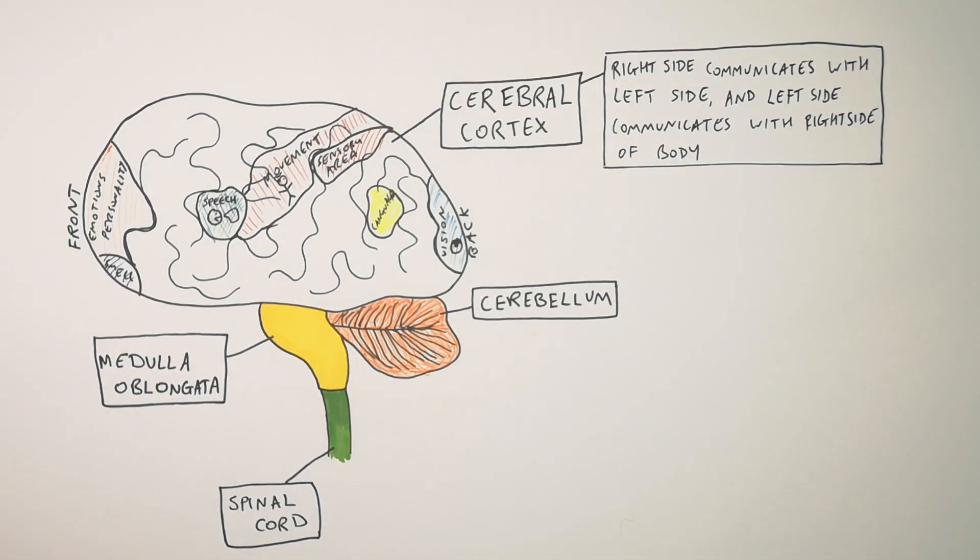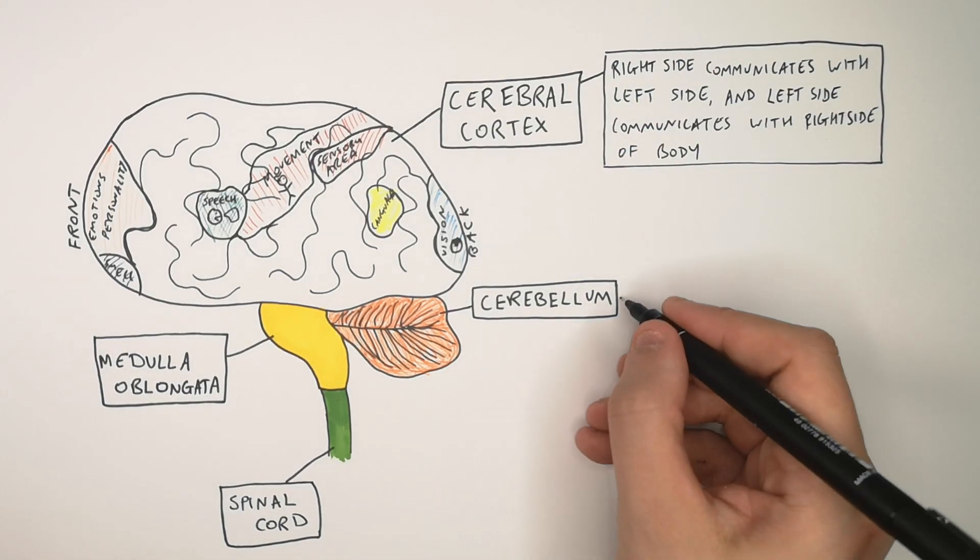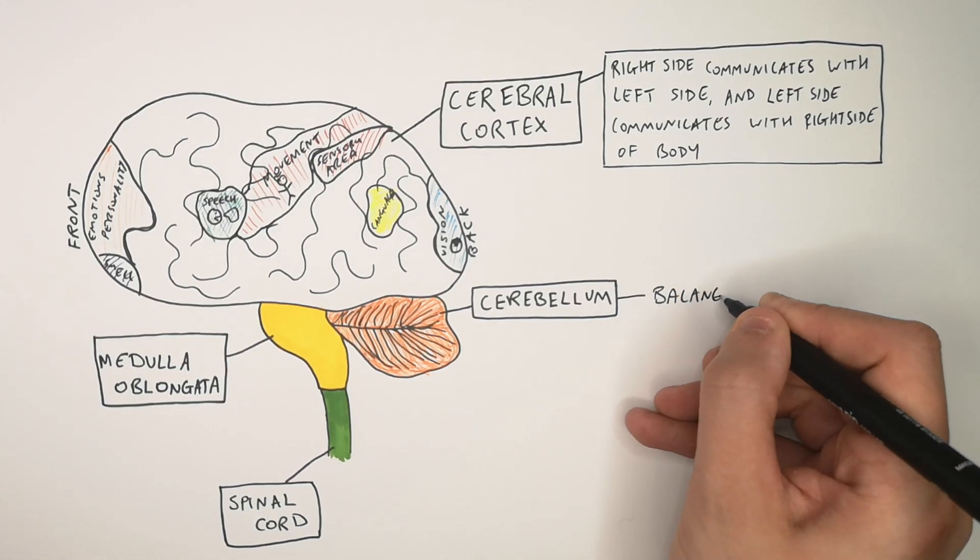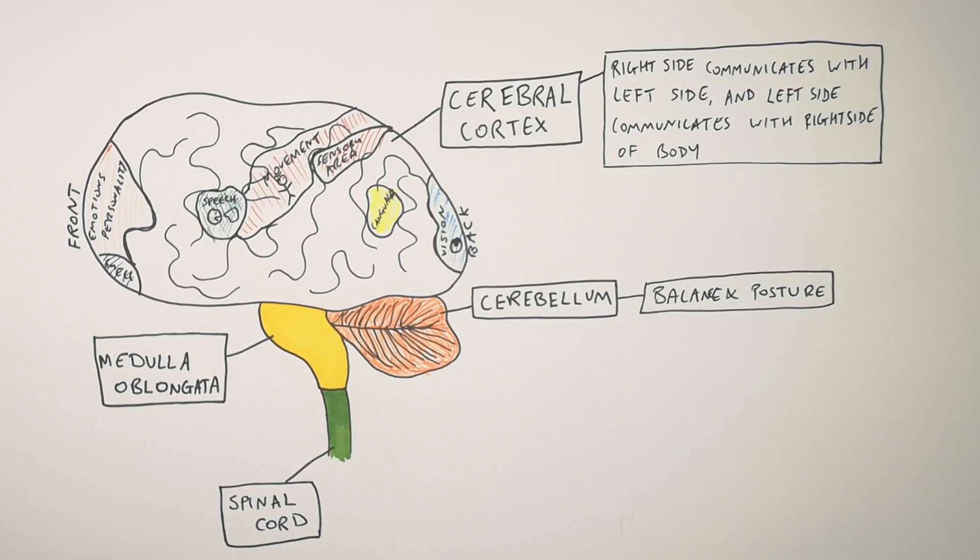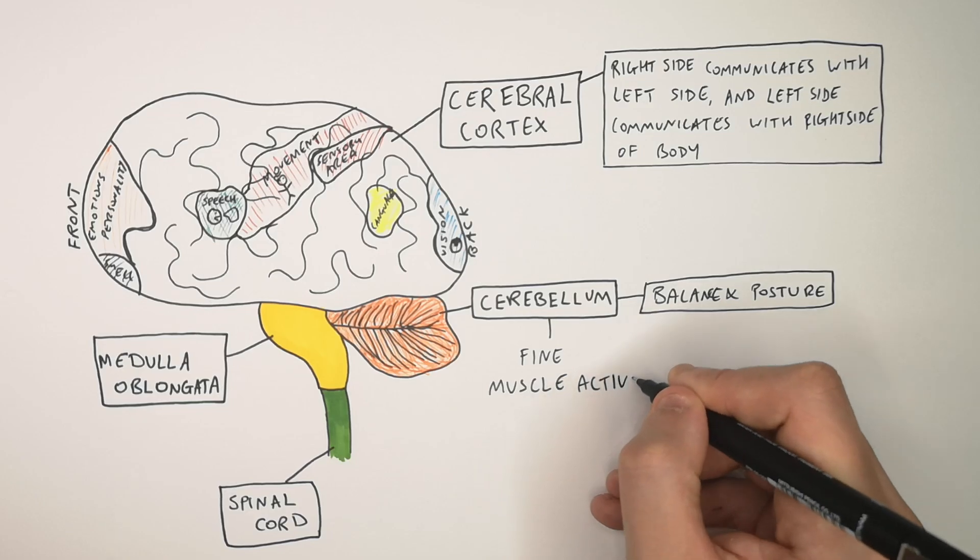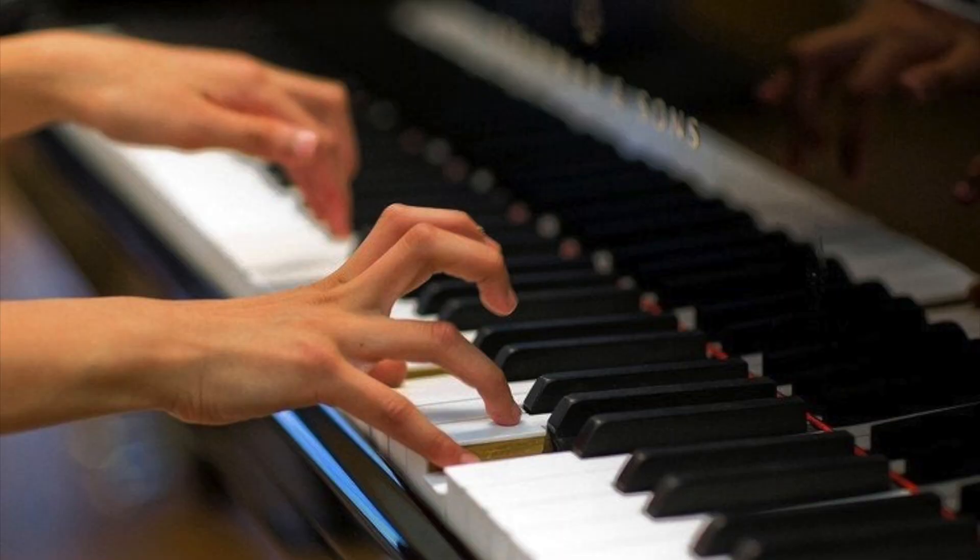So what is the function of the cerebellum? Our cerebellum is involved in our finer muscle controls. So it's involved in our balance and posture and our fine muscle activity. So someone with a larger cerebellum or more active cerebellum can be seen in pianists, because their finger muscle control has to be really accurate.